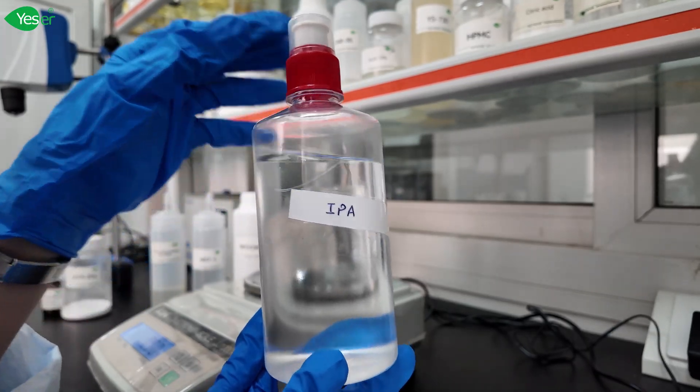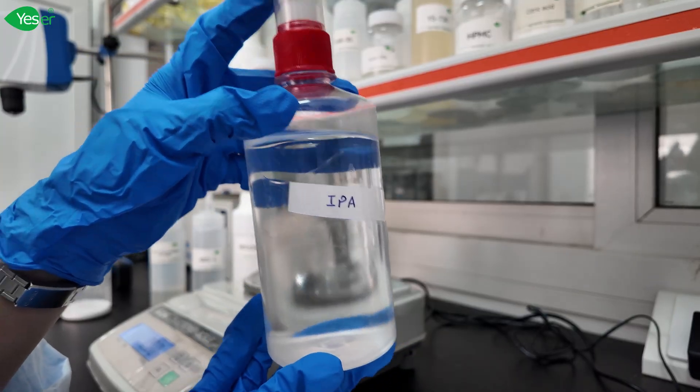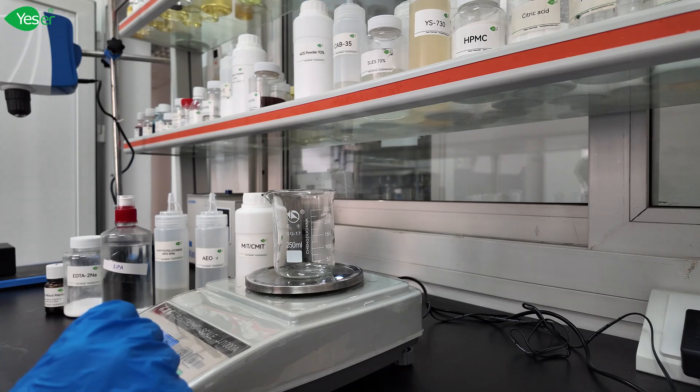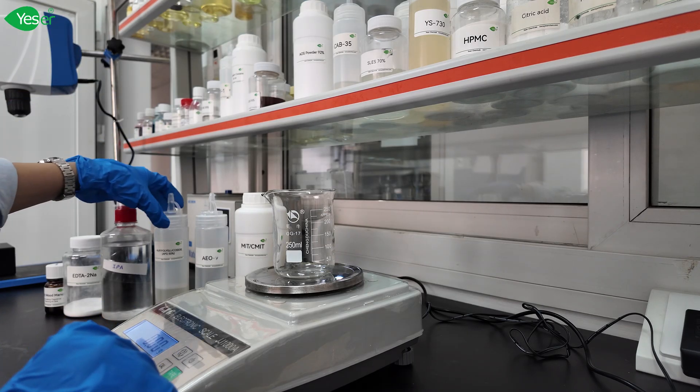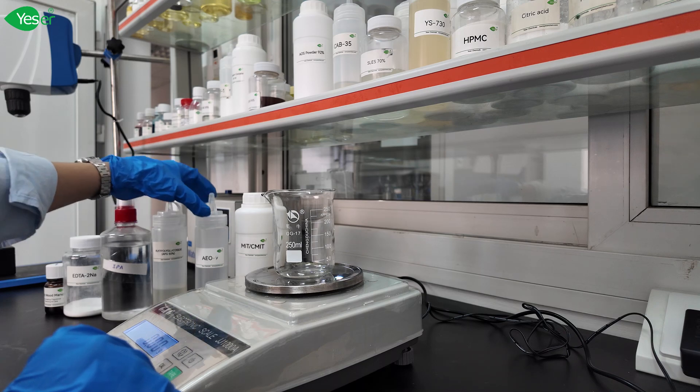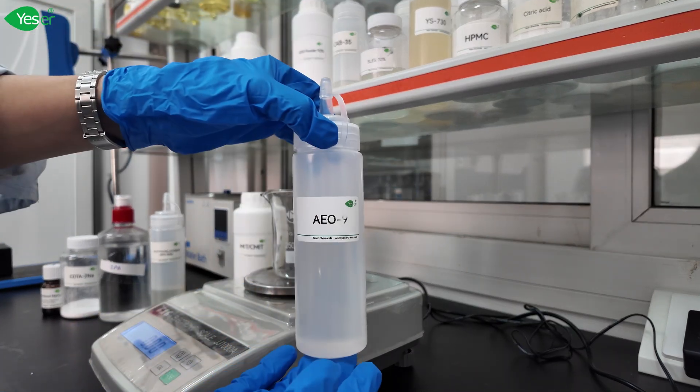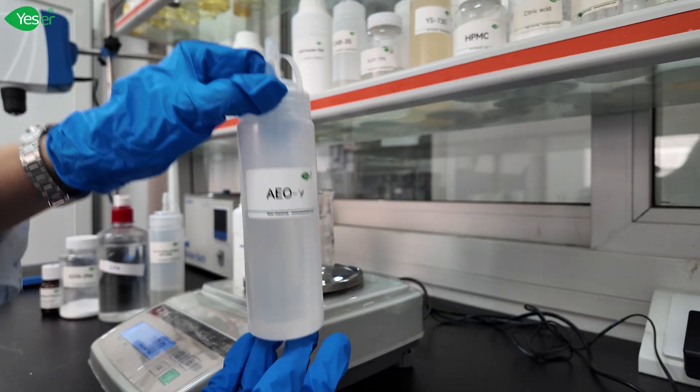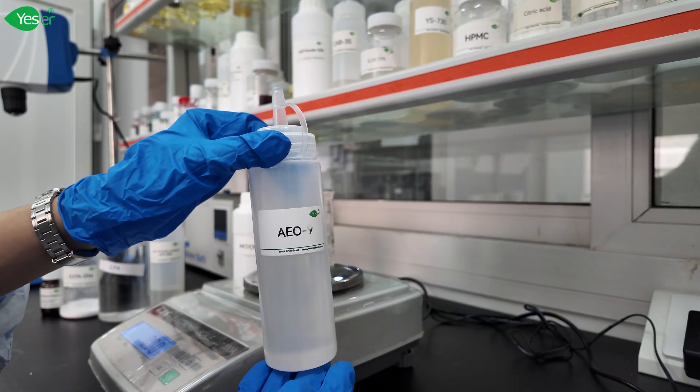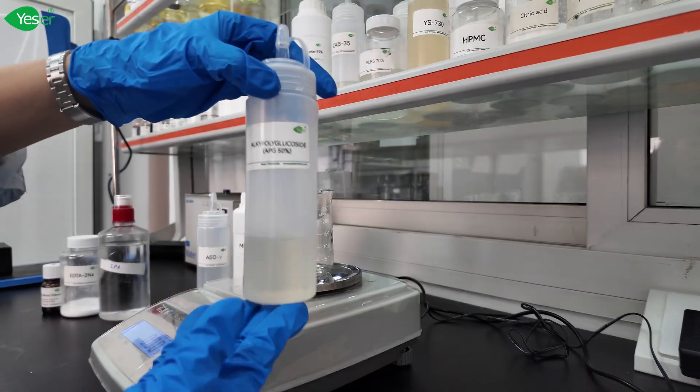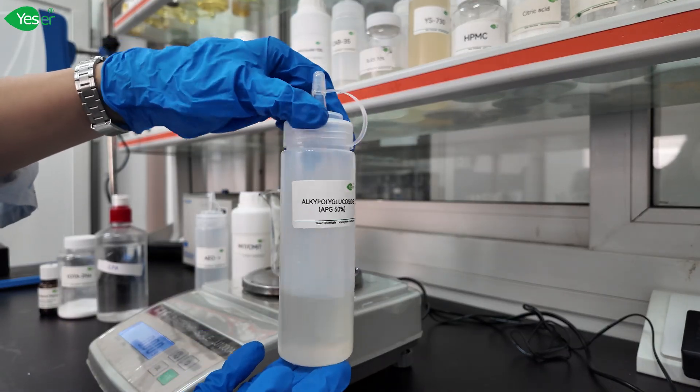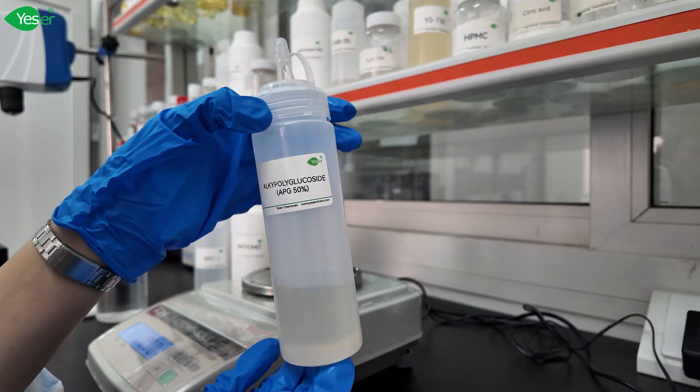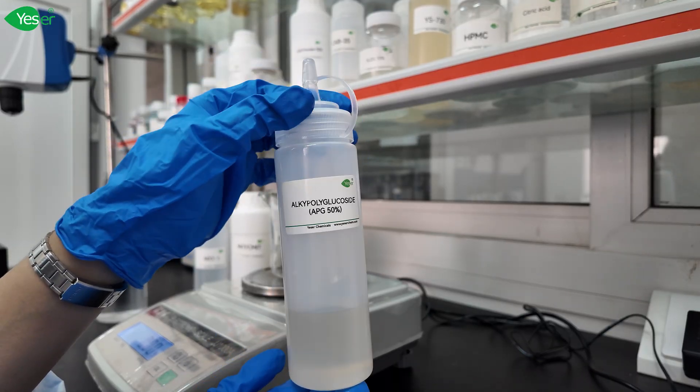For our glass cleaner we also need surfactants to remove the dirt, oils and grease on the glass surfaces. So we selected A09, our powerful degreaser and also non-ionic surfactant which is desirable for this low foam type of product. Also we have alkyl polyglucoside APG 50 percent, this is a mild non-ionic surfactant as well so it will also help in removing the grease, oil and dirt on our surfaces.